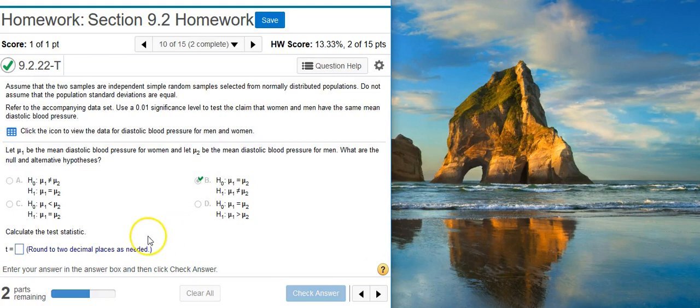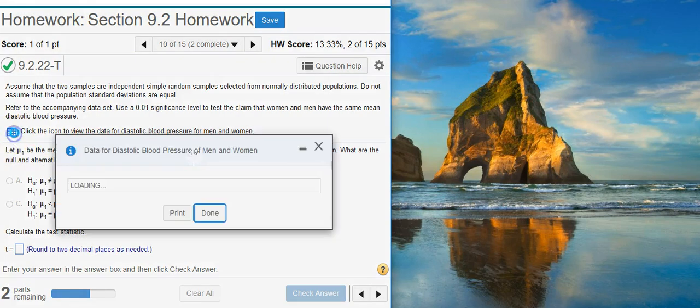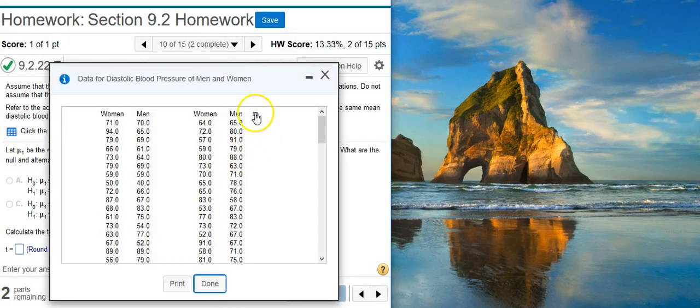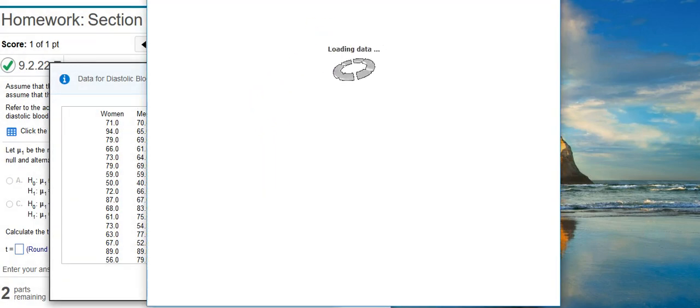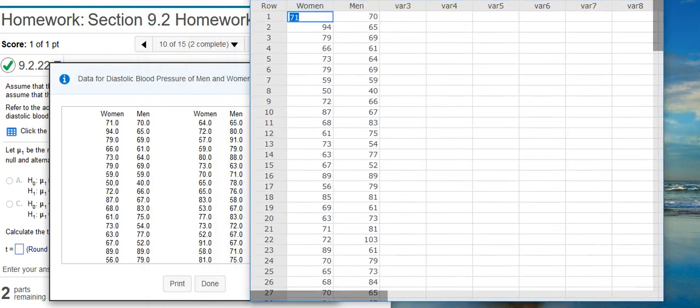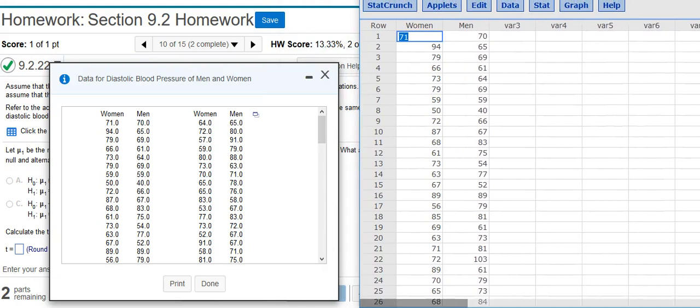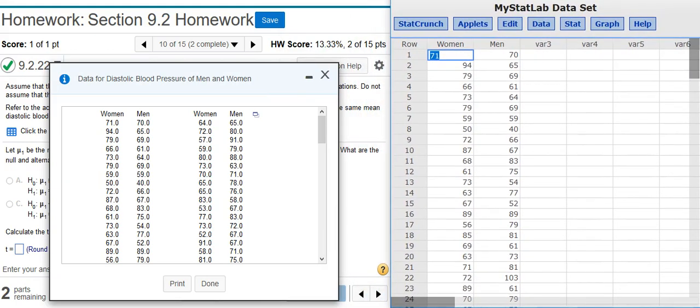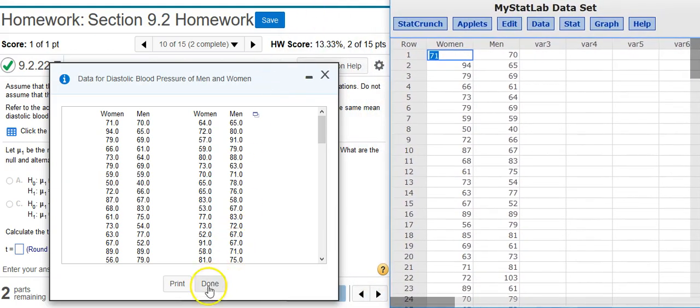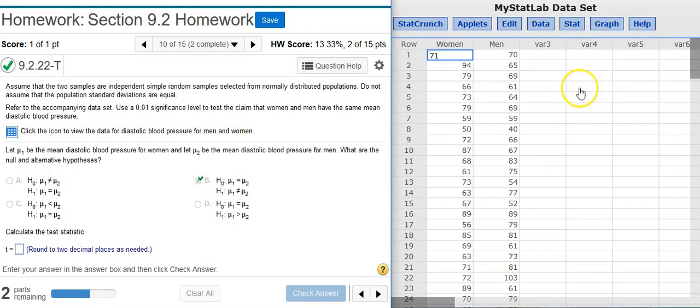Now, the second part of the problem asks us to find the test statistic. To do this, we're going to take the data that they give us here and we're going to put the data into StatCrunch. Here's my window with StatCrunch, and the data is inside. I'm going to resize this window so we can see a little bit better what's going on. So now, to get the test statistic, I need to perform the actual hypothesis test.